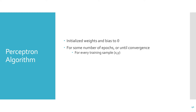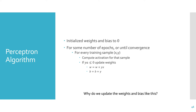We take a training sample (x, y) and compute the activation for that sample. We check if the label times the activation is less than or equal to zero. If it is, we update the weights. If our label is negative and our activation is positive, the perceptron predicted incorrectly, so we should update. Multiplying them together simply tells us whether the label and activation have different signs. We update the weights using: w equals w plus y times x, and b equals b plus y.